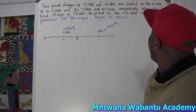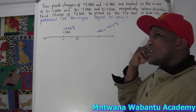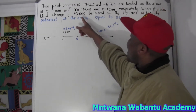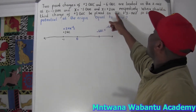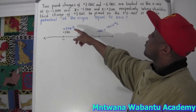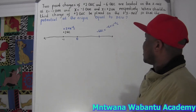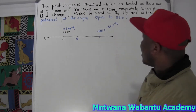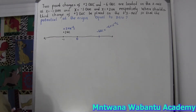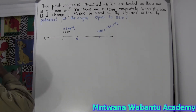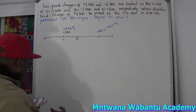Now, what we want to find is where to place the third charge on the x-axis so that the electric potential at the origin equals zero. We don't know where to place it yet — we have to calculate the distance.